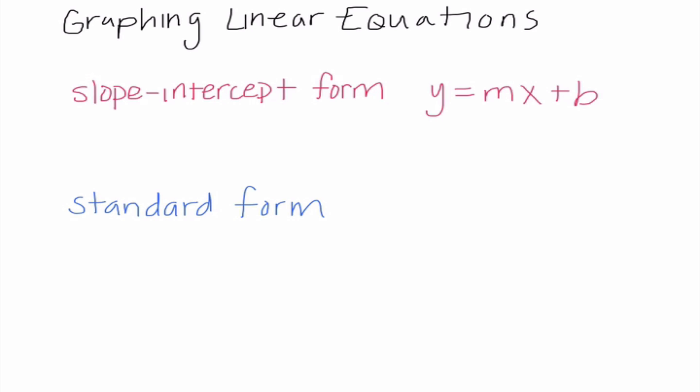Other times, if y is not isolated, we might need to do a little bit of work first. And the two important things for us to know in slope-intercept form is that m is equal to our slope, and b represents our y-intercept, hence slope-intercept form.